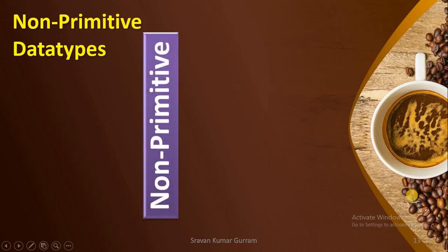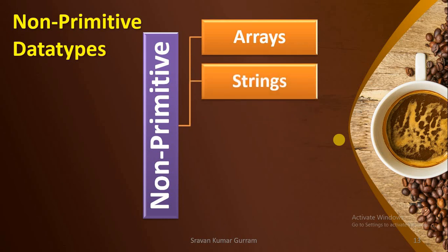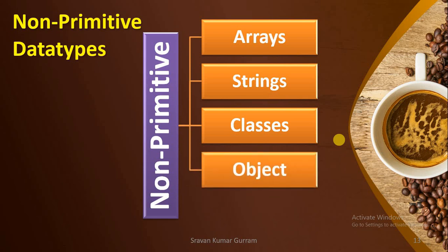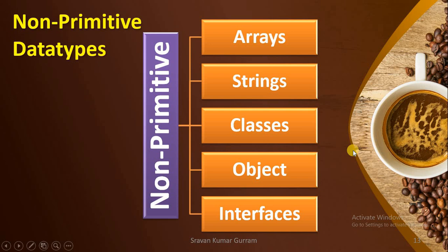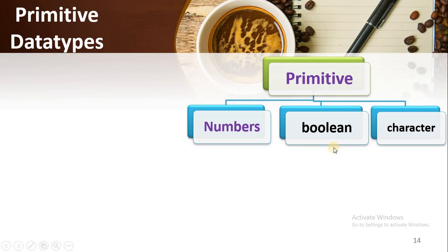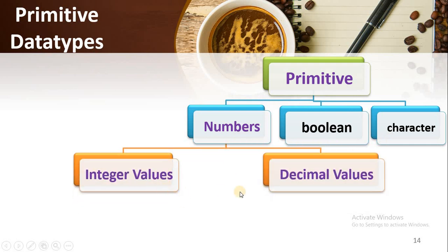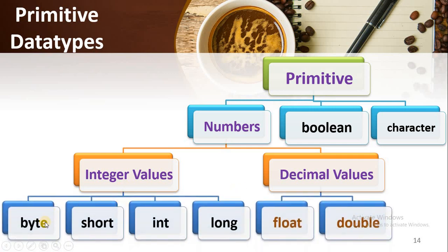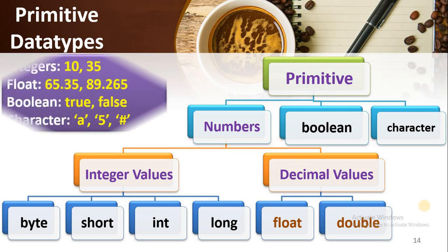Now let us see what are the different non-primitive data types available in Java: Arrays, Strings, Classes, Object, and Interfaces. All these are non-primitive data types and very important topics — we will cover each one in the coming videos. Similarly, the primitive data types in Java fall into major categories: Boolean, character, and numerical types. Numbers can be integer values or decimal values. For integer values, you may use byte, short, int, or long data types. For decimal values, you may use float and double data types. In this video I wanted to show the list of primitive data types only — all these will be clear with practical examples in the next video.